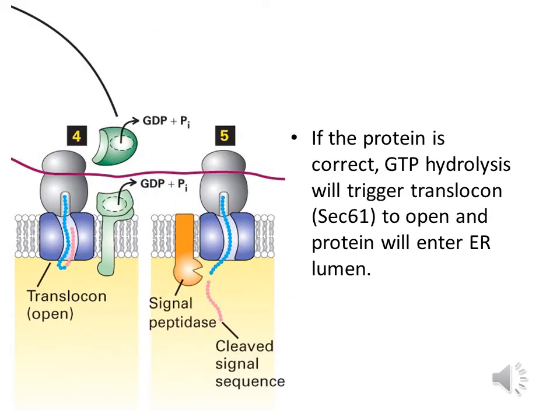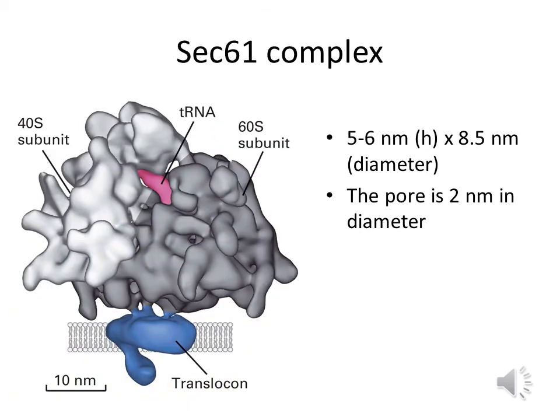As mentioned earlier, if the protein translation is correct and it is destined to the endoplasmic reticulum, then a GTP hydrolysis occurs, which triggers the translocon. The translocon — SEC61 — gets opened and the protein enters the endoplasmic reticulum lumen.